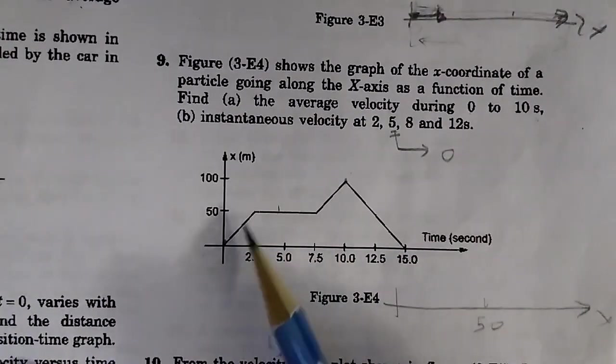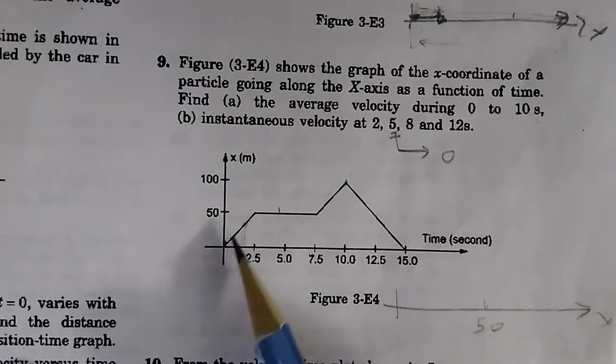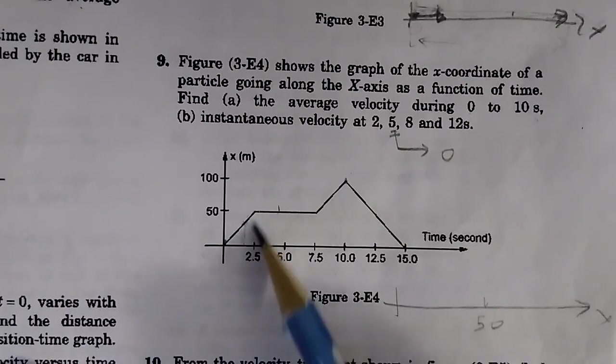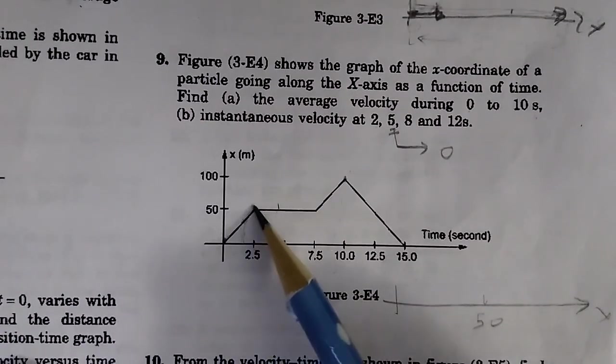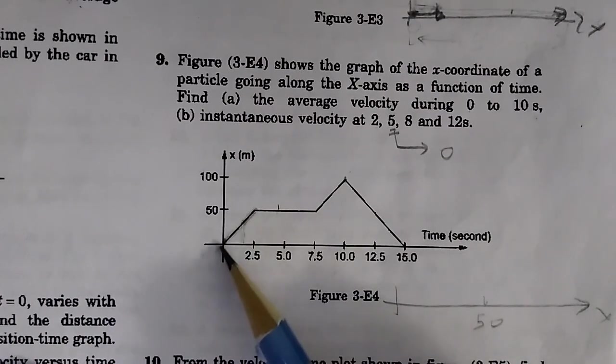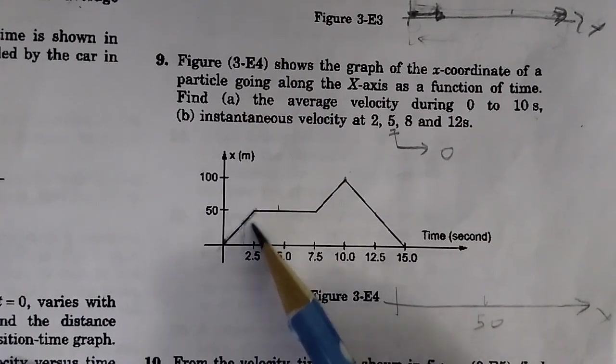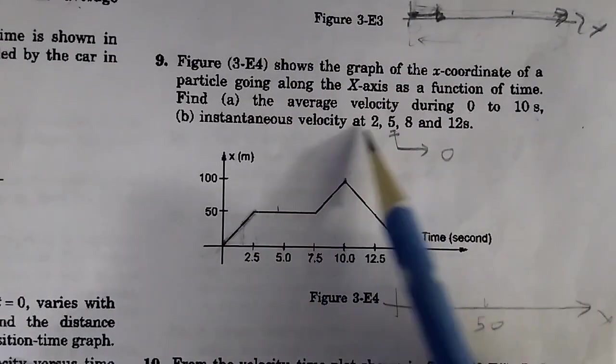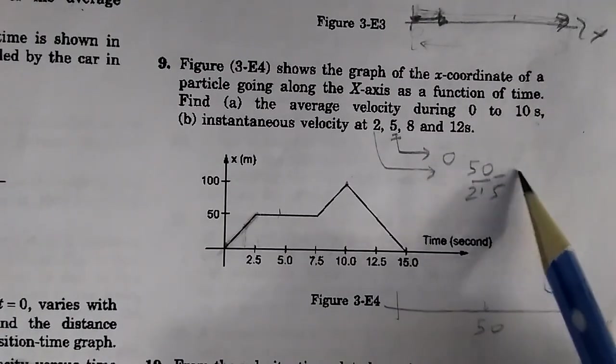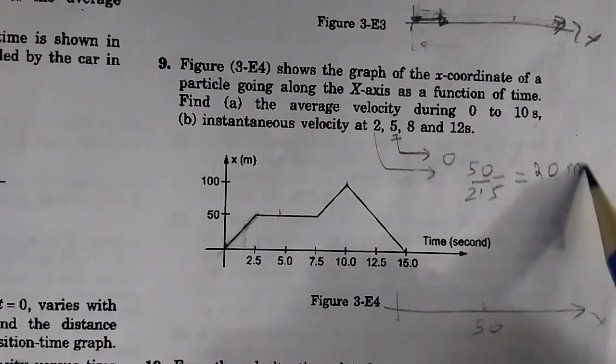Now let's do this part. What is the velocity at t equal to 2? The velocity will be given by delta x divided by delta t. This is a straight line, so the velocity of this particle all along this will be the same and will be given by the slope of this curve. The slope of this curve will be 50 divided by 2.5, and this will be equal to 20 meters per second.